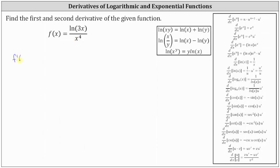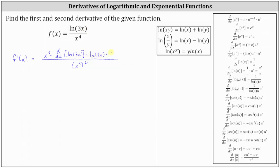For the first derivative, the denominator is equal to the square of the denominator of the original function, which is the square of x to the fourth. The numerator is the denominator x to the fourth times the derivative of the numerator, which is the derivative of natural log three x with respect to x, and then minus the numerator of natural log three x times the derivative of the denominator, which is the derivative of x to the fourth with respect to x.